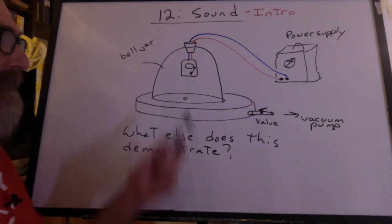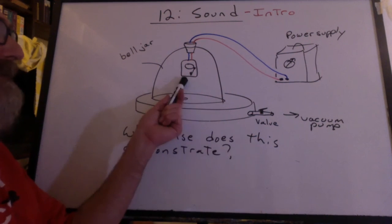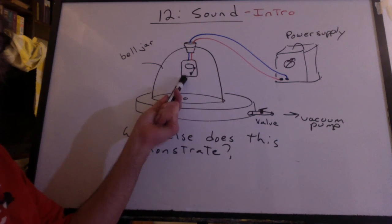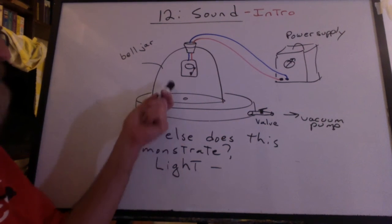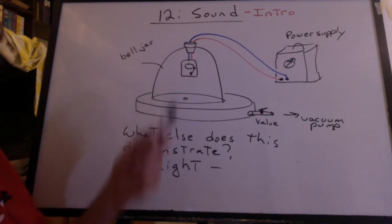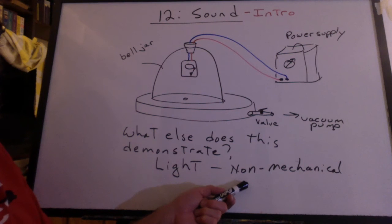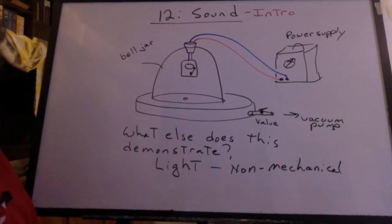Think about it. When the air is all pumped out, can you still see the bell inside? Ah, yeah. What's that tell us about light? It's not any darker at all. Light is non-mechanical. We can see it without the air in there.